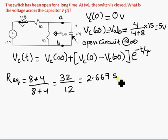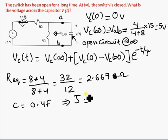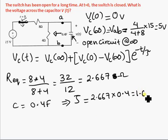So that's our, not seconds, this is going to be ohms. The capacitor is 0.4 farad, hence our tau is then equal to 2.667 times 0.4, which gives me 1.0667 seconds. So that's tau.